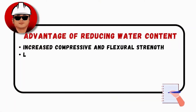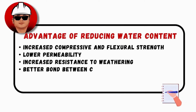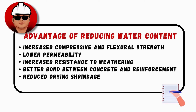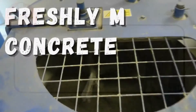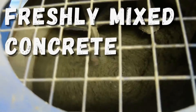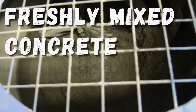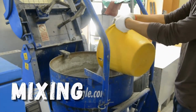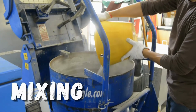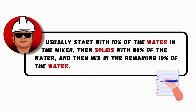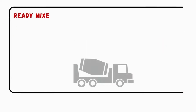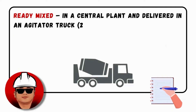The amount of water used in relation to the amount of cement, for any particular set of components and curing circumstances, has a significant impact on the quality of hardened concrete. Following are some advantages of reducing water content. Now let's talk about the first stage: Freshly Mixed Concrete. For mixing, usually start with 10% of the water in the mixer, then add solids with 80% of the water, and then mix in the remaining 10% of the water. This is the process of mixture on a larger scale.